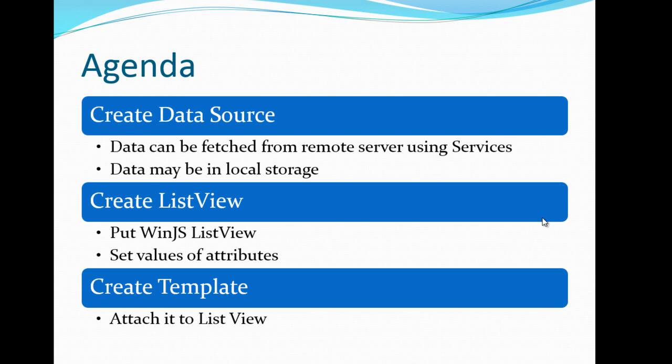If your data is in local storage then you will be using local storage APIs to read the data and then later bind it to the ListView. Whereas if your data is coming from some remote services — for example a service exposing an OData endpoint or a REST endpoint — then you will have to consume data accordingly based on the type of service.